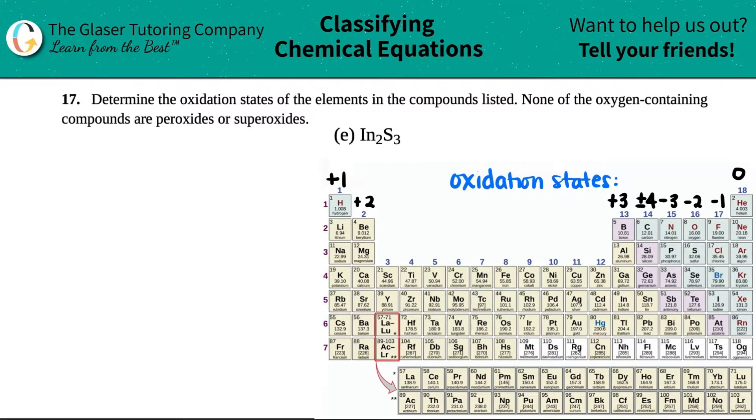Number 17: Determine the oxidation states of the elements in the compounds listed. None of the oxygen-containing compounds are peroxides or superoxides. For letter E, we need to find out the oxidation states, aka the charges, of indium (In) and sulfur (S) in the compound indium sulfide, or In₂S₃.